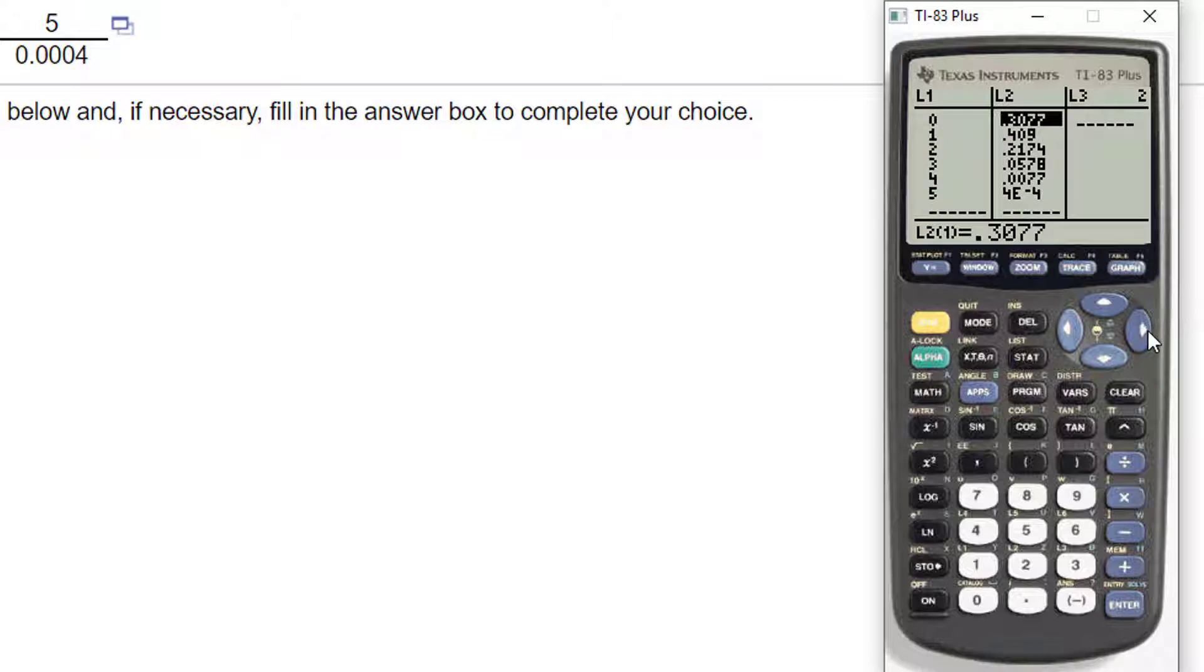So I'm going to go back into stat into edit. I'm going to actually put a formula here. So this part's important. I need to be up where it says L3. So I click the up arrow and now I'm going to put a formula here, which says to multiply column L1 with column L2. So I do second L1 times second L2. And when I hit enter, you'll see that I get my list.